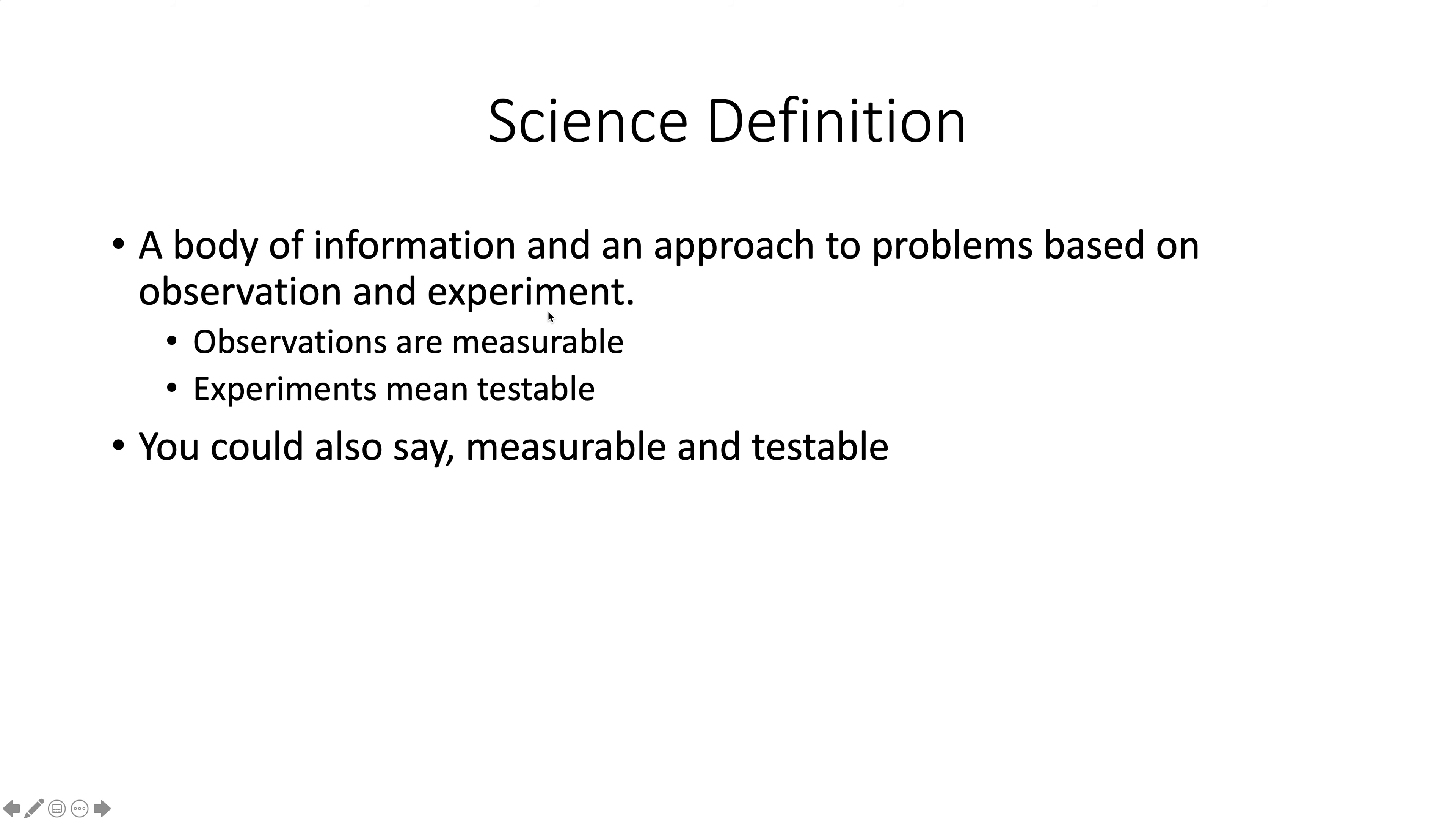Science is a body of information and approach to problems based on observation and experiment. Very specifically, observations are things that are measurable, and an experiment means it's something that's testable. So you can say science is measurable and testable, and that means for something to be scientific, it has to meet that criteria. There's some very interesting conversations that are just not scientific. It doesn't mean they're not important or interesting, but it's important to understand this is what science is and what it is not. If you can't really measure it or test it, it's kind of hard to be scientific with it.